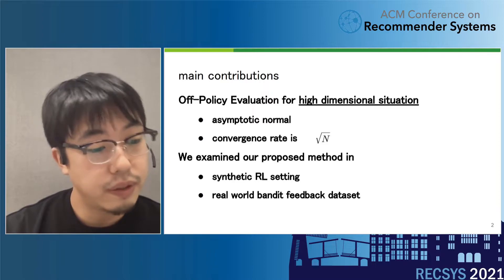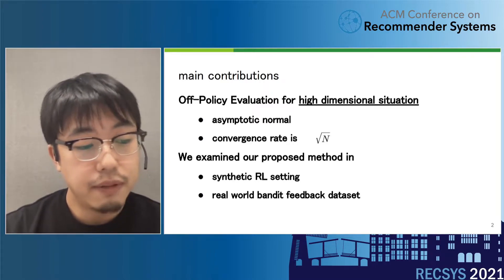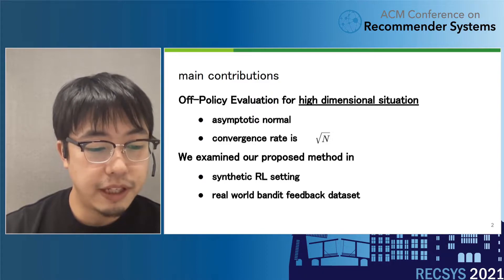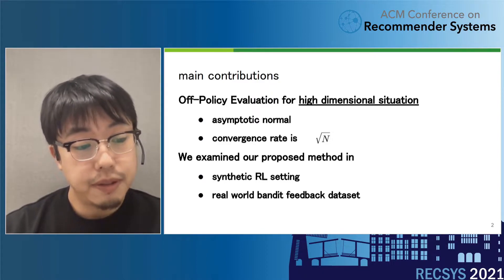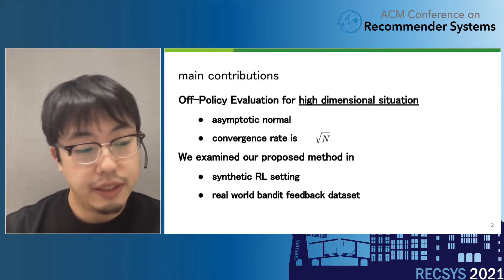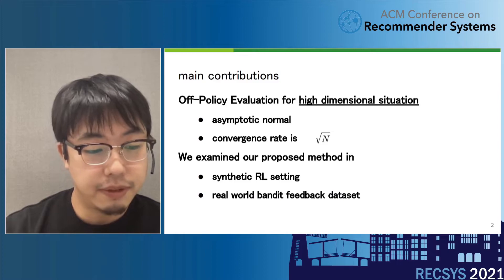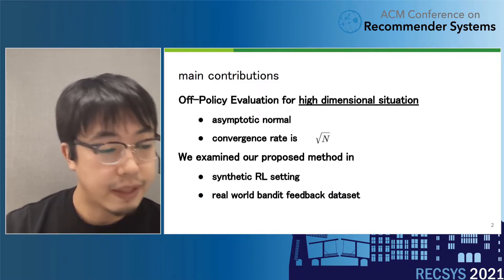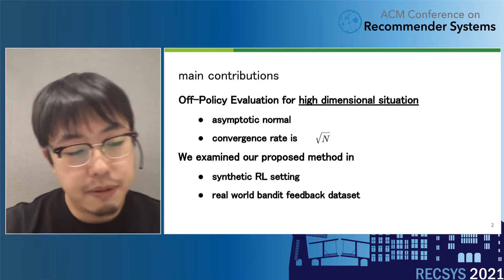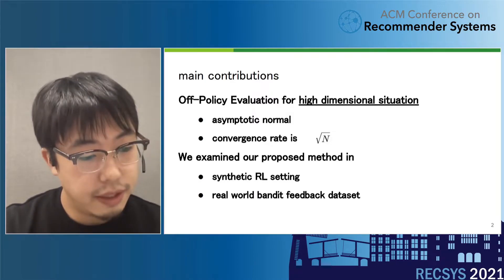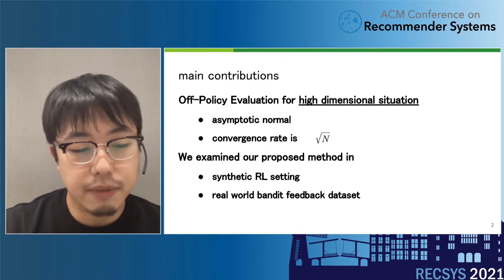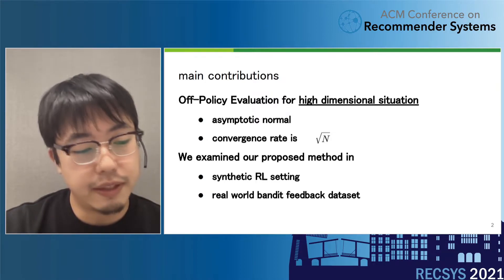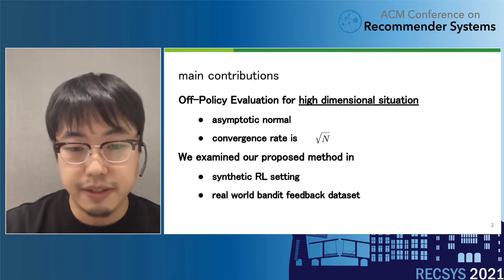Here is our main contribution. We proposed an off-policy evaluation method for high-dimensional settings. Our proposed method is unbiased, asymptotically normal, and the convergence rate is square root of n. We also examine our proposed method in two experiments: one is a synthetic reinforcement learning setting, and the other is a real-world bandit feedback dataset.